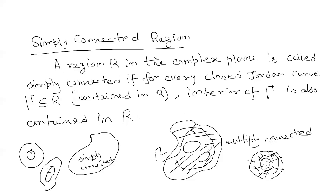This is called a multiply connected region. We are concerned about simply connected regions, where any closed curve you consider has its interior fully contained in the region. You can also say: if you try to shrink the curve, it will converge to a point in R. But if you try to contract a closed Jordan curve gamma in a multiply connected region, you cannot get a point solely belonging to R because of the hole present there.